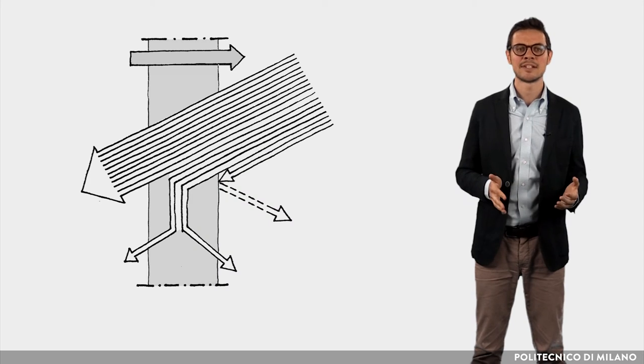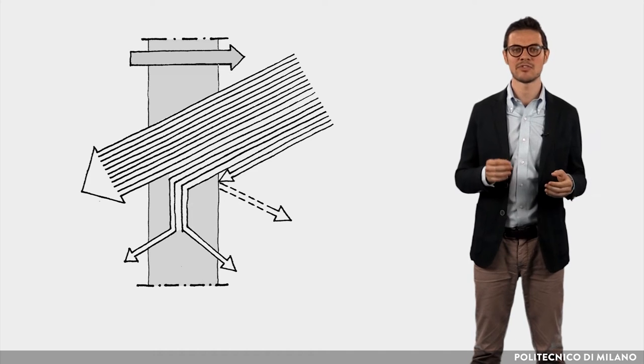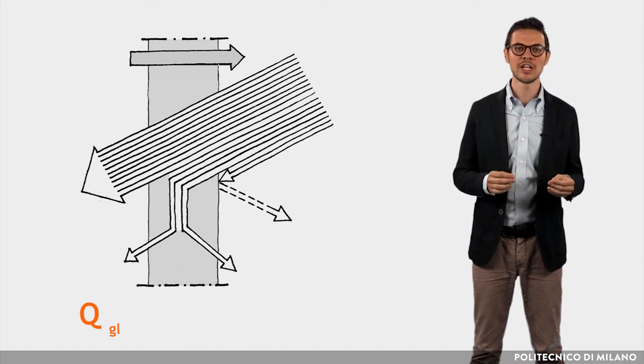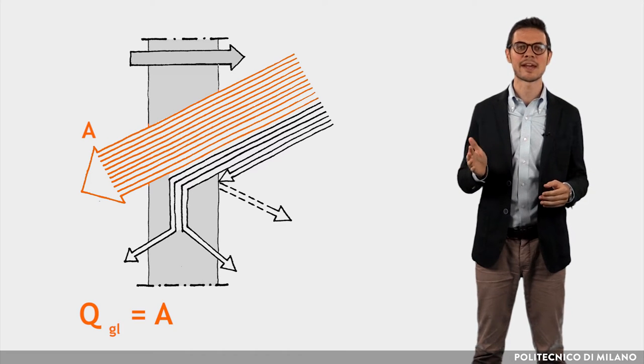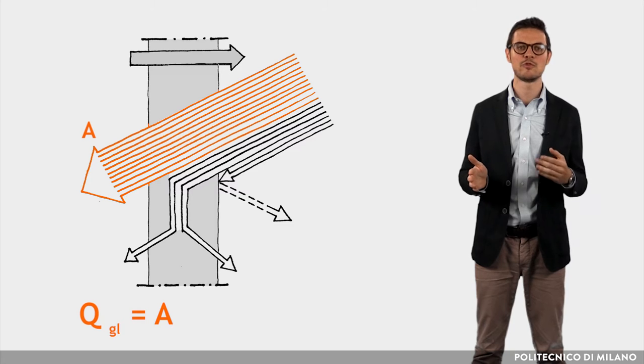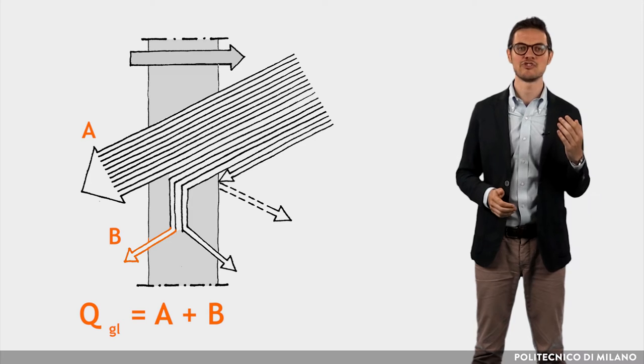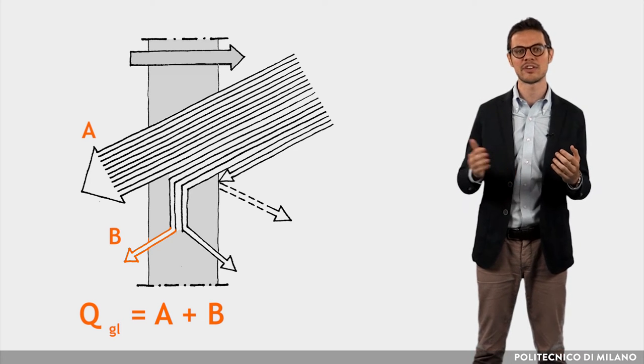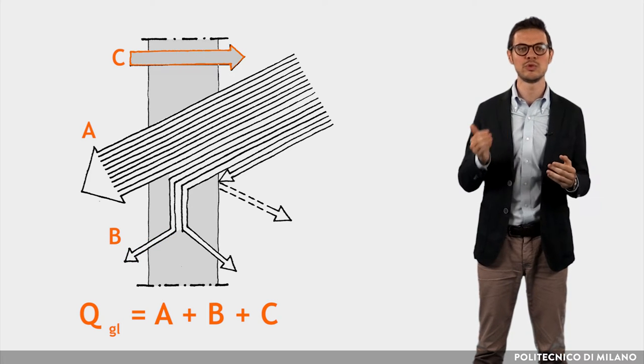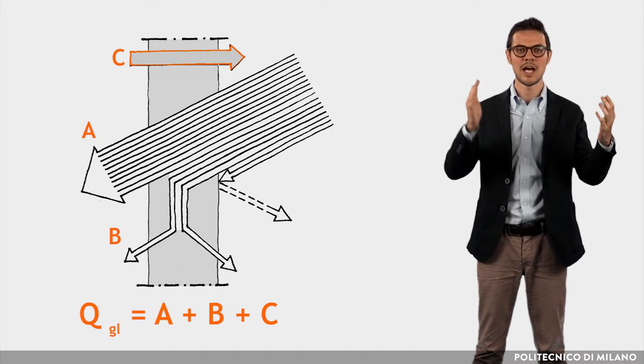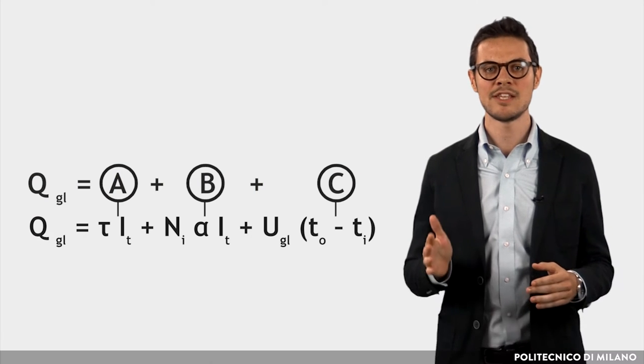In order to better understand the glass properties, a simple energy balance of a glass pane is described, in which the total energy flux through the glass is equal to the sum of: a) solar radiation flux transmitted through the glass, b) the fraction of incident solar energy flux absorbed by the glass and transferred inside, and c) the thermal flux due to the difference in temperature between inside and outside. The instantaneous energy balance can then be written as shown.